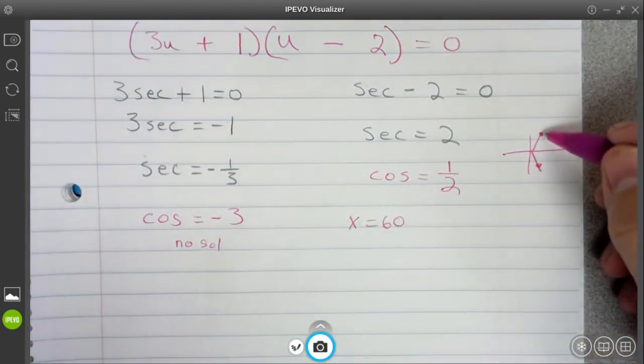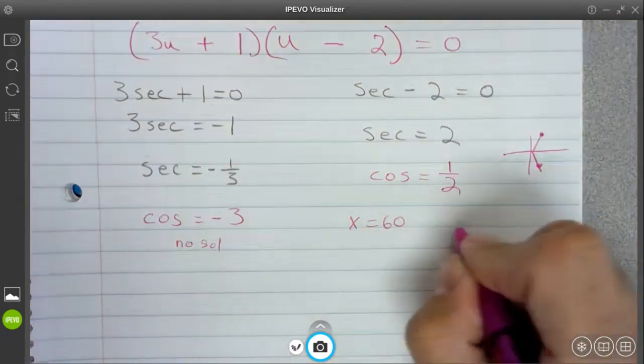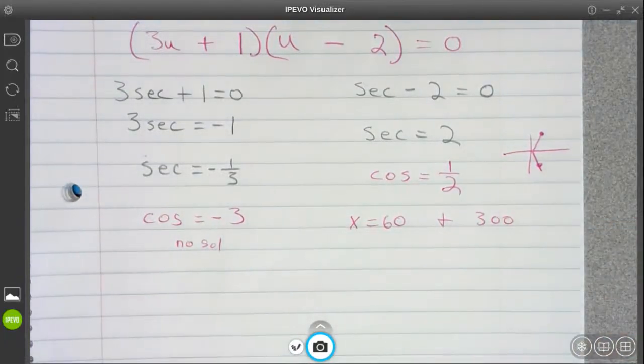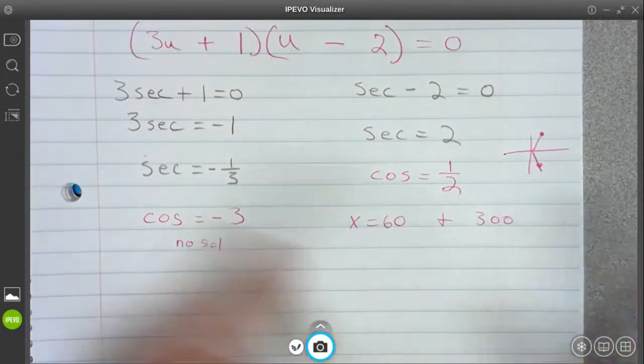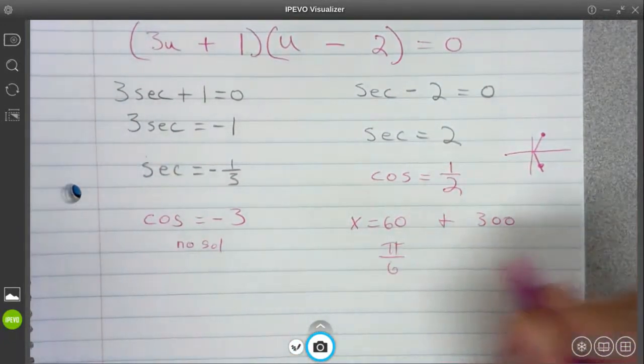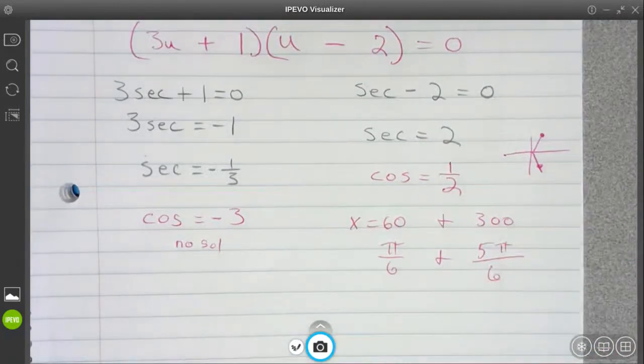And what is negative 60 degrees? 300, yeah. So 60 degrees and 300 degrees. Those would be my two solutions. If we were answering in radians, we'd say pi over 6 and 5 pi over 6.